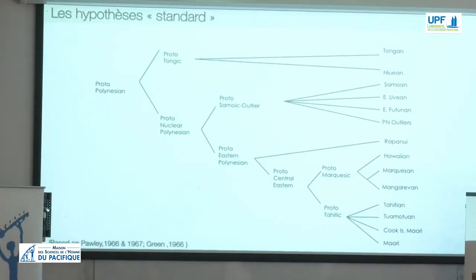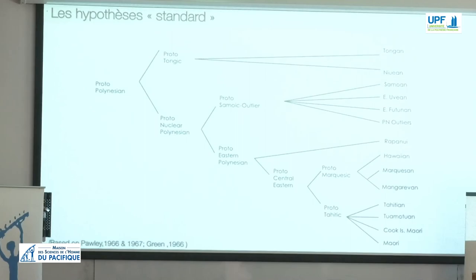Within the Polynesian family there have been many hypotheses over the years. The classic hypotheses of Pali and Green posited two major subgroups: Tongic, including Tongan and Niue, and nuclear Polynesian, including Samoa, the other western Polynesian languages, the Polynesian outlier languages, and the eastern Polynesian languages. These hypotheses also subdivided the eastern Polynesian languages into two major groups — Marquesic and Tahitik. Marquesic consisted of Mangerewa, the Marquesan varieties, and Hawaiian; Tahitik consisted of Tahitian, the Cook Island languages, Maori, and the varieties of the Tuamotus. Rapa Nui was then on its own.